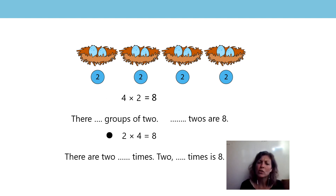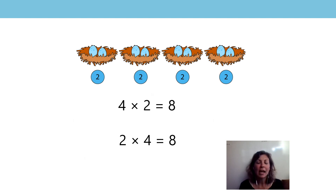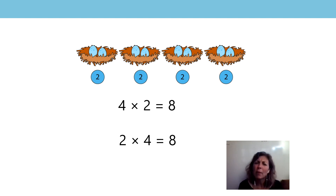What about in this equation — what does the 2 represent? Yes, it still represents the 2 eggs in each nest, the 2 eggs in each group. And what does the 4 represent? The 4 groups. And what does the 8 represent? That's right, the number of eggs altogether. Can you really focus on these equations now and tell me what is the same about them? Did you say that the product was the same? That's right, the product of both equations is 8. They also have the same factors. But the factors are in a different order — but they're the same factors, so the product is the same.